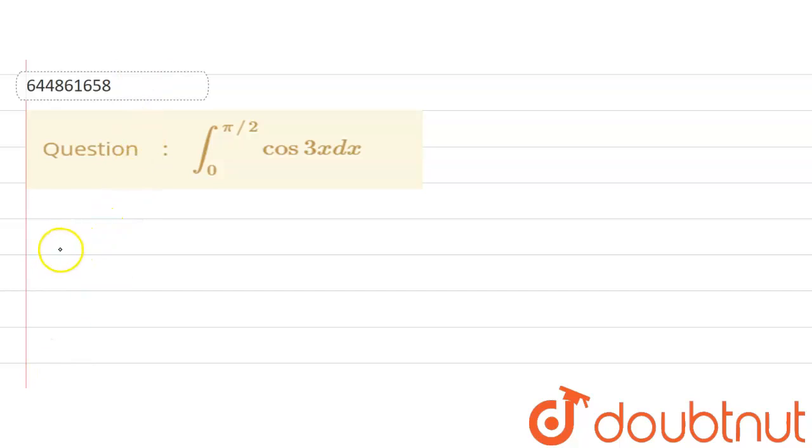Our question is integration of cos 3x dx from 0 to pi by 2. So let's start our solution. 0 to pi by 2, integration of cos 3x dx.